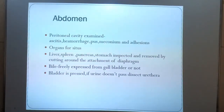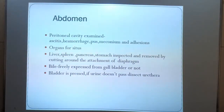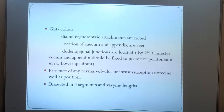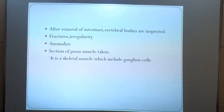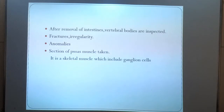The abdomen and peritoneal cavity are examined for ascites, hemorrhage, pus, meconium, and adhesions. Organs are inspected in situ. The liver, spleen, pancreas, and stomach are inspected and removed by cutting around the attachment of the diaphragm. The gut color and diameter are noted, and the presence of any hernia or intussusception is noted. After removal of the intestine, vertebral bodies are inspected for fractures, irregularities, and anomalies.